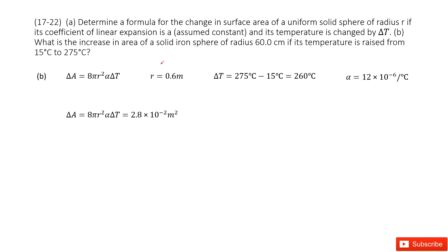The next part gives you the quantities: the radius is 0.6 meters, and ΔT is final temperature minus initial temperature, which is 275°C - 15°C = 260°C.